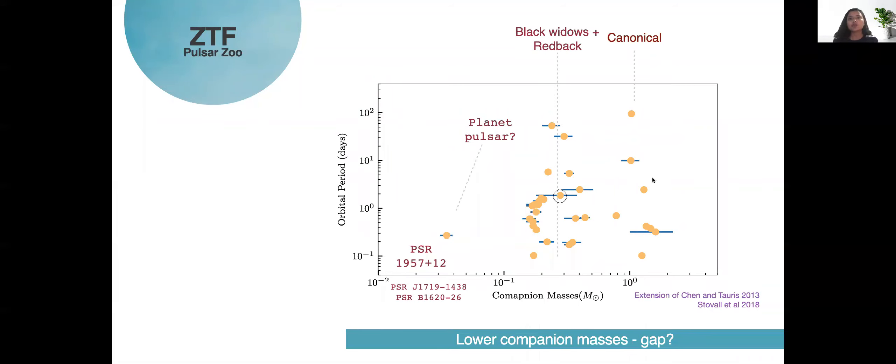If you plot companion masses of these pulsars against orbital periods of the binaries in case of millisecond pulsars we see different subclasses. Black widows and redback kind of pulsars which are short orbital pulsar binaries are seen at companion masses of about 10 to minus one and greater. Then there are other interesting pulsar binaries such as the planet pulsar that was found in 1957 and pulsars such as PSR B1957+12 which exists at much lower companion masses and then of course there are canonical pulsar millisecond pulsars.